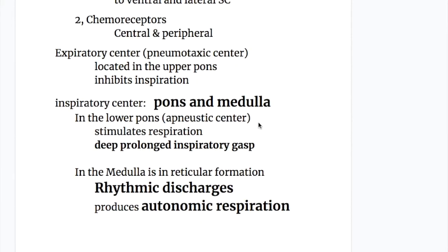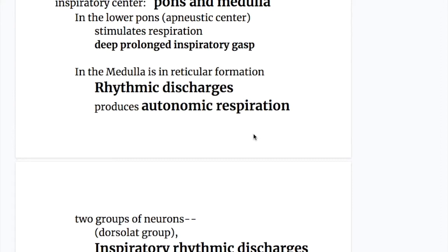The expiratory center is in the upper pons, known as the pneumotaxic center. It inhibits respiration. The inspiratory centers are in the pons and medulla. The apneustic center is in the lower pons, below the pneumotaxic center — it stimulates respiration and causes deep prolonged inspiratory gasps. The inspiratory center in the medulla is in the reticular formation, causing rhythmic discharges and producing autonomic respiration.